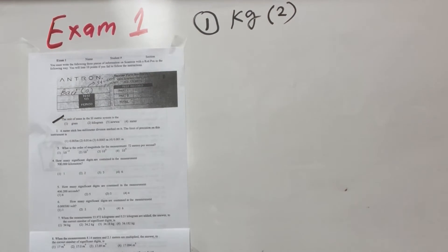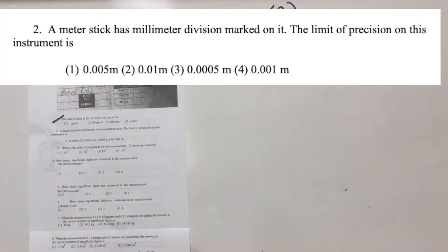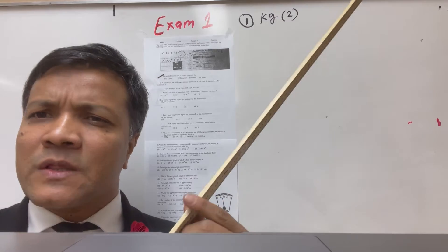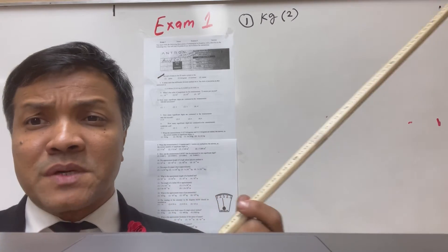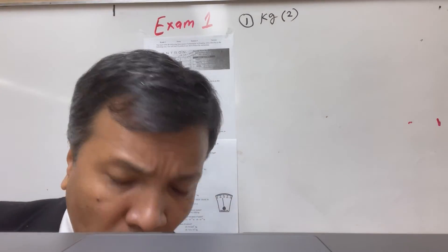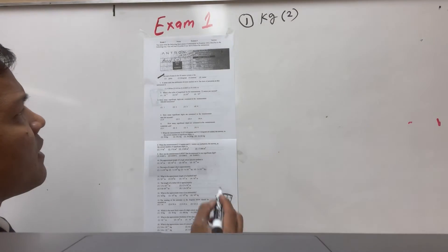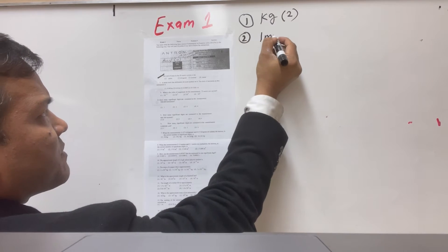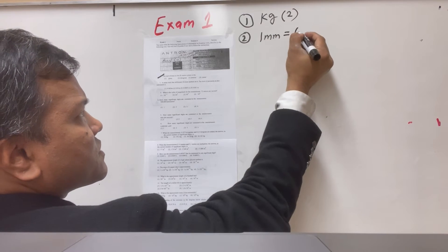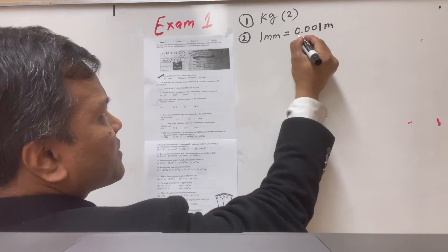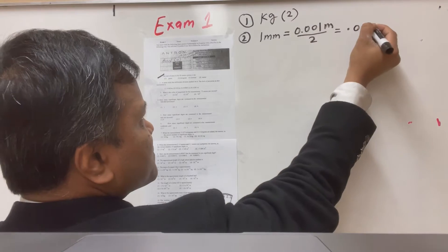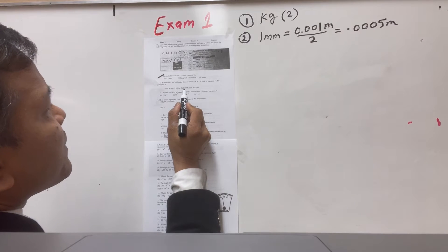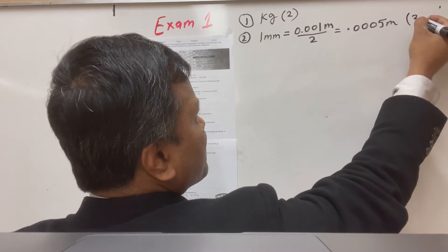Number two: a meter stick has millimeter division marks on it. The smallest mark is not a meter, not a centimeter — it's a millimeter, and there are 1000 millimeters. The limit of precision is one millimeter, which is 0.001 meter. Divide by two and you get 0.0005 meter. That is option number three.